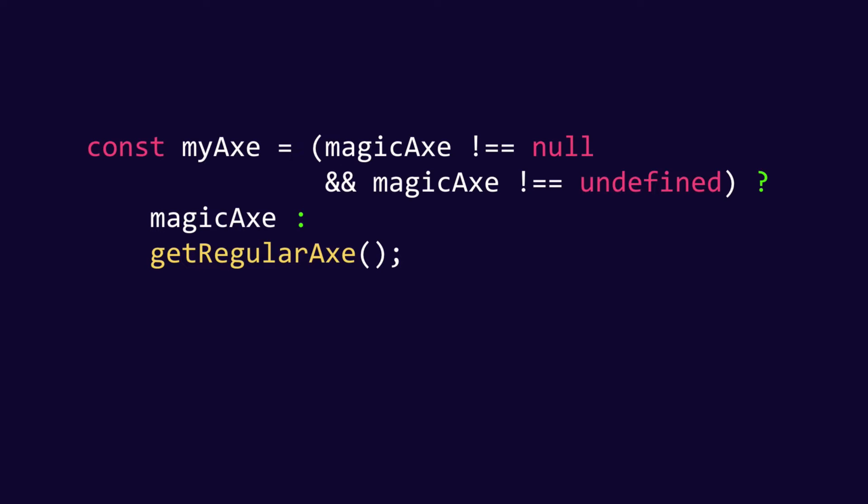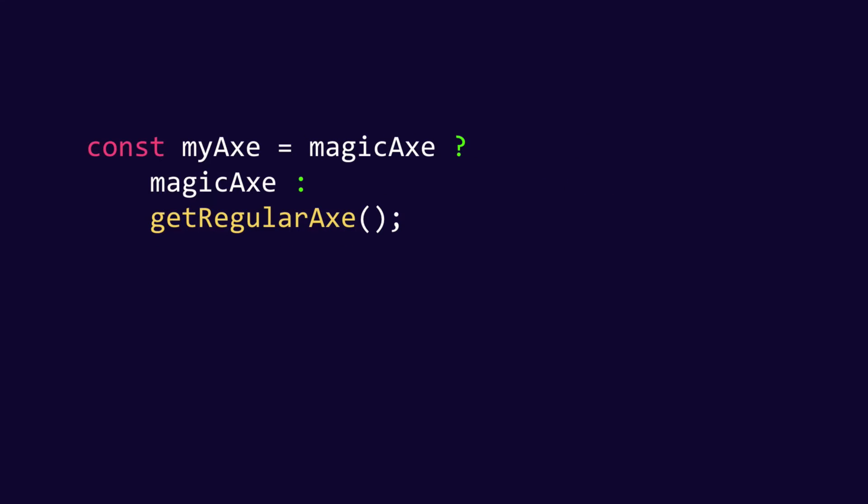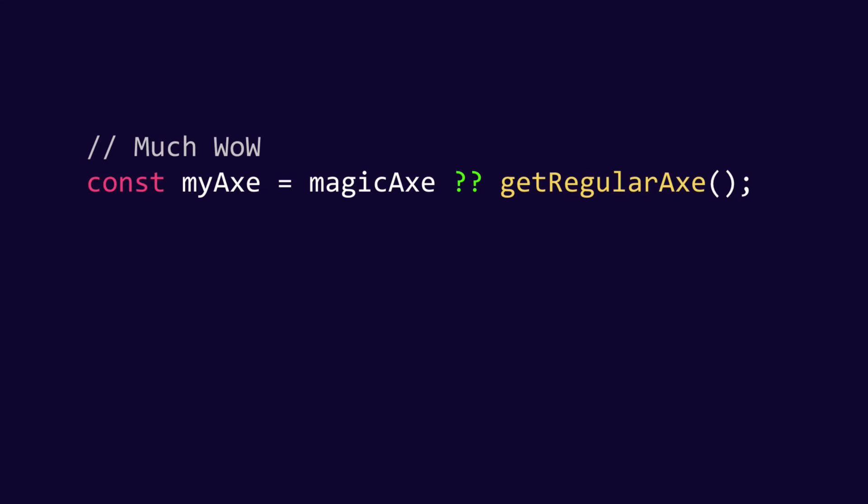Then we have the nullish coalescing operator, also in TypeScript 3.7 and also in the ECMAScript standard. It's a very nice way to assign a default whenever you have a value that is null or undefined. In this case we have myAxe, because the magic axe can be null or undefined. If it is defined, I get magic axe; otherwise I get a regular axe. So that's how it works — it compacts this null check using the nullish coalescing operator.